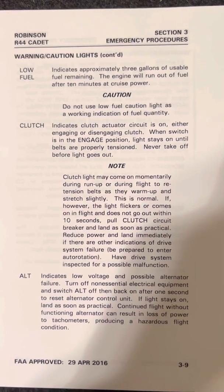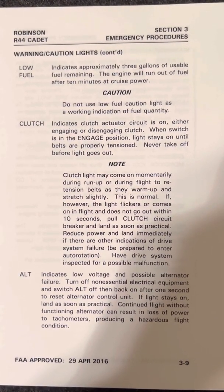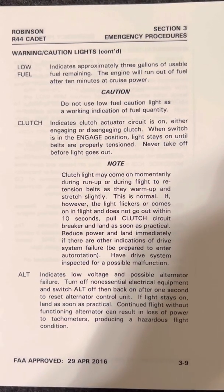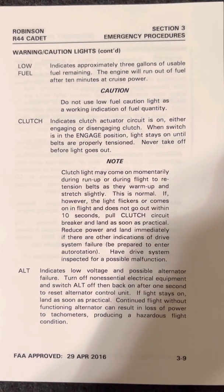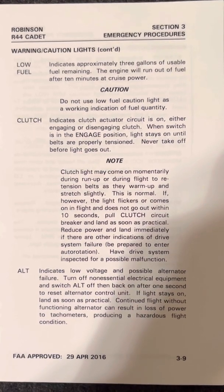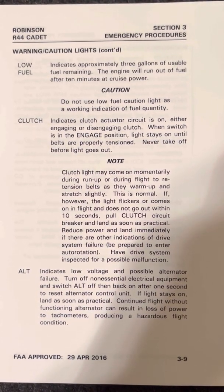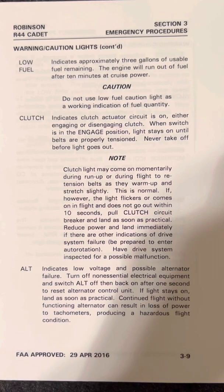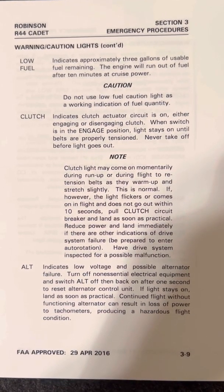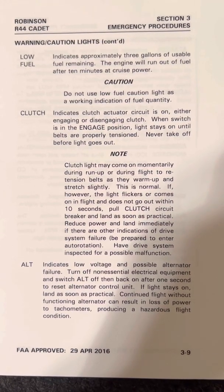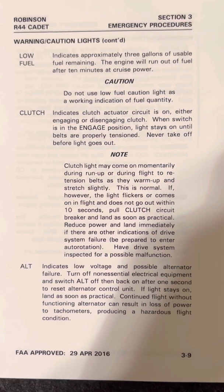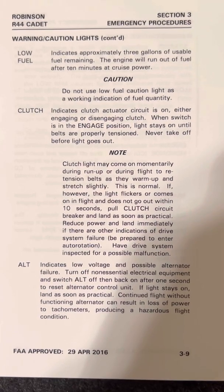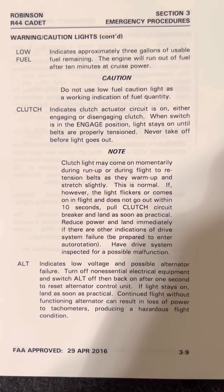Clutch light indicates clutch actuator circuit is on, either engaging or disengaging the clutch. When switch is in the engaged position, light stays on until belts are properly tensioned. Never take off before light goes out. Clutch light may come on momentarily during run-up or during flight to re-tension belts as they warm up and stretch slightly — this is normal. If the light flickers or comes on in flight and does not go out within 10 seconds, pull clutch circuit breaker and land as soon as practical. Reduce power and land immediately if there are other indications of drive system failure. Be prepared to enter autorotation. Have drive system inspected for a possible malfunction.